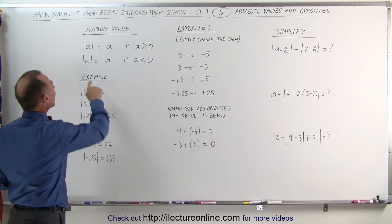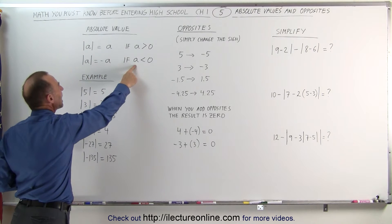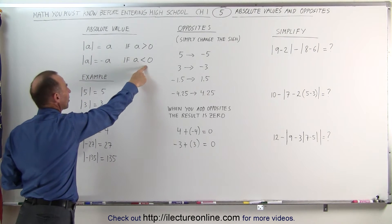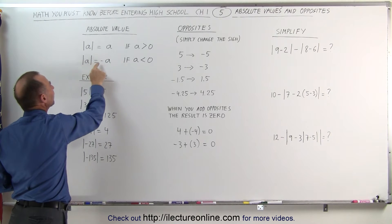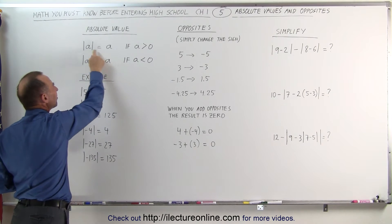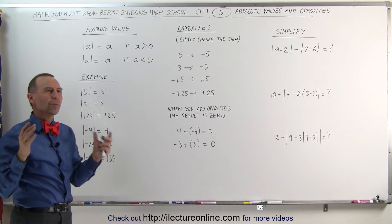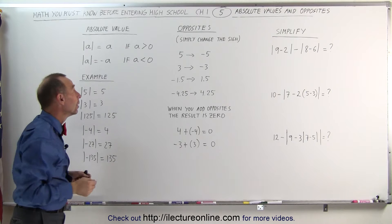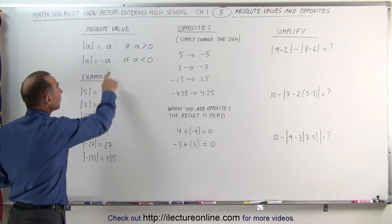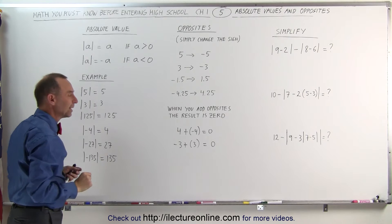But what happens when you take the absolute value of a negative number? What if a is less than zero? Then the absolute value of that number is the negative of that number. This definition is a little confusing because you remember that the absolute value should give you a positive quantity. Well, if a is a negative number and you put a negative in front of it, that turns it into a positive number again.